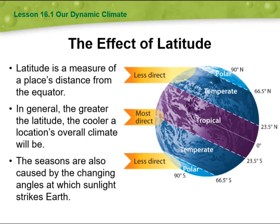Then we have the effect of latitude — less direct, most direct, and less direct sunlight. Latitude is a measure of a place's distance from the equator. In general, the greater the latitude, the cooler a location's overall climate will be.